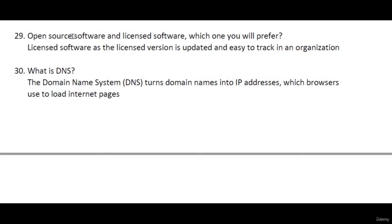Open source vs licensed software — which one would you prefer? The difference is that licensed software keeps updating and that's easy to track for any organization. With open source, you don't know who to contact or whether it will solve your problem. With licensed software, you can easily reach people who can actually help you. That's why licensed software is much better than open source software.